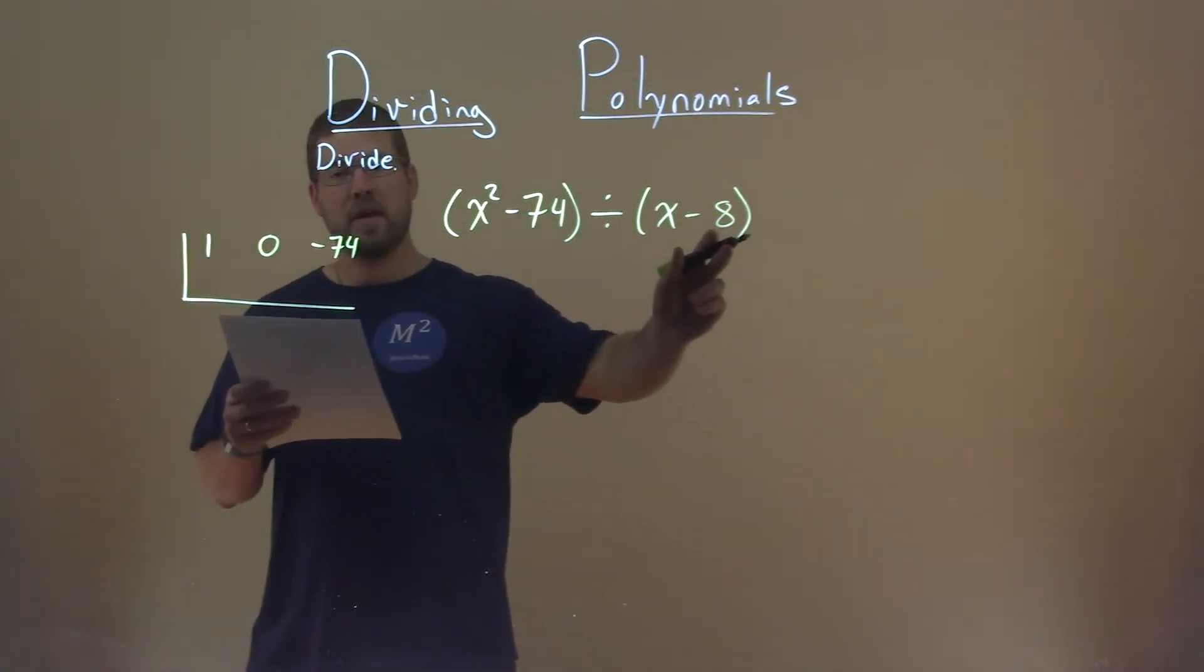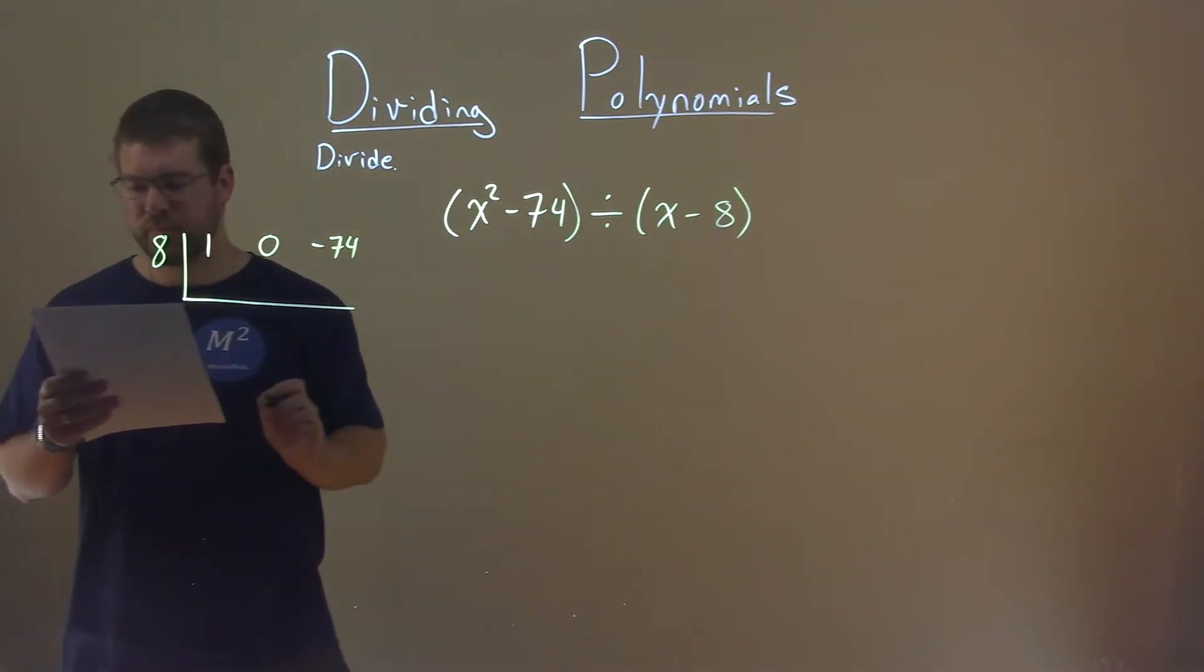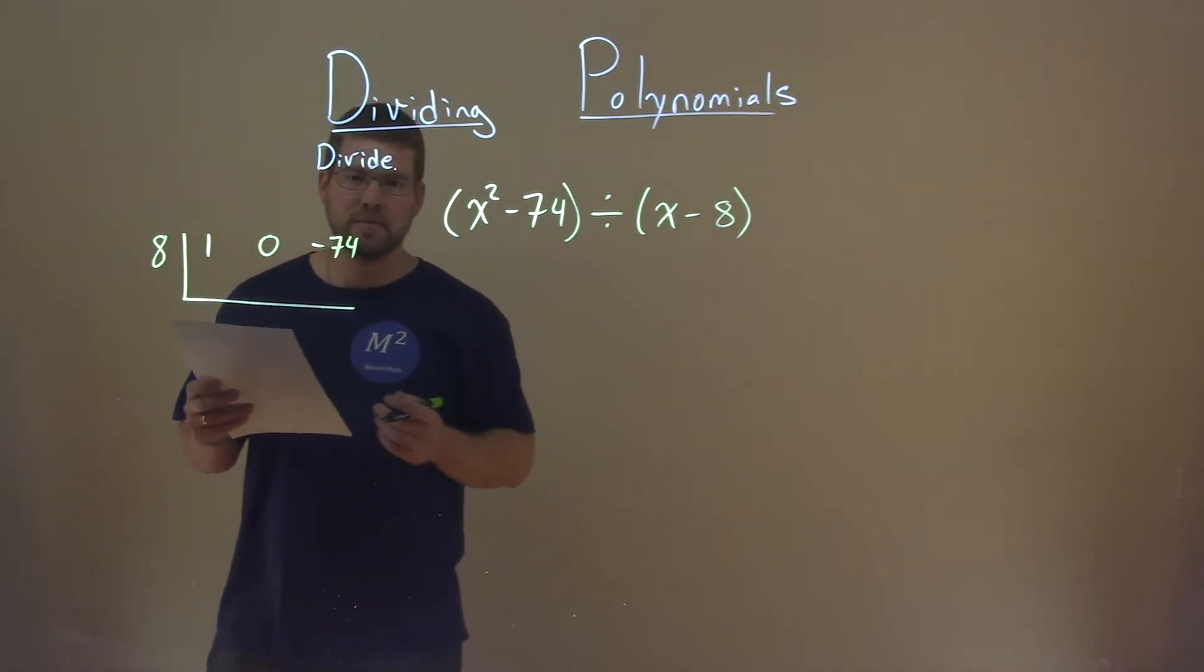We have x minus 8, so for synthetic division we use positive 8. Now we're set up to divide synthetically.